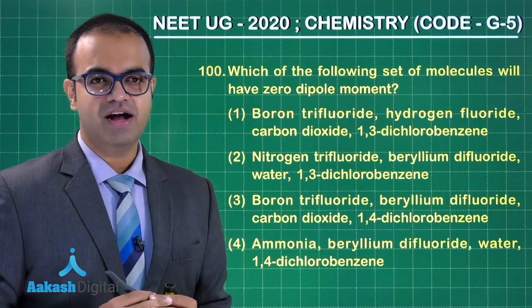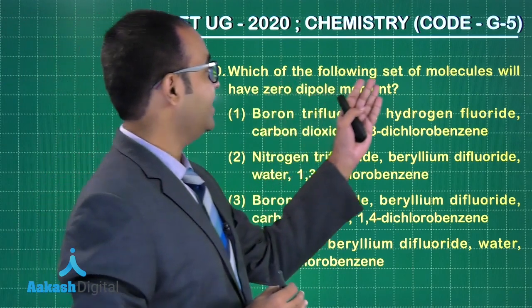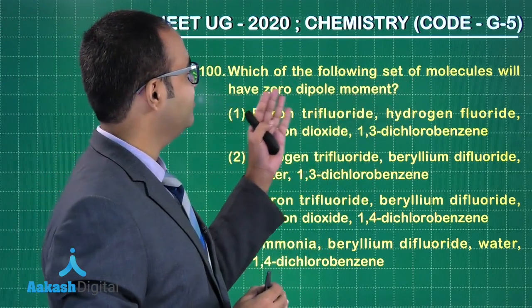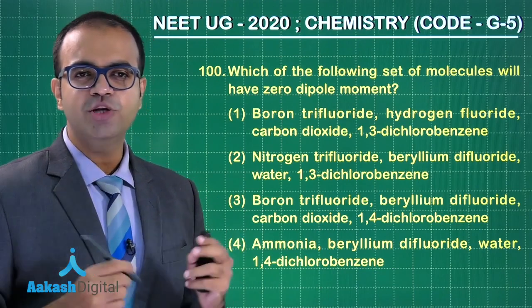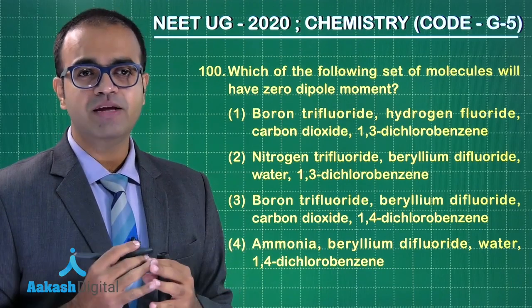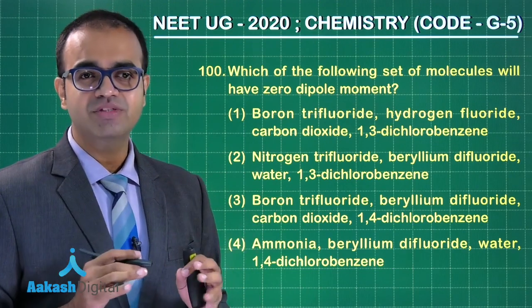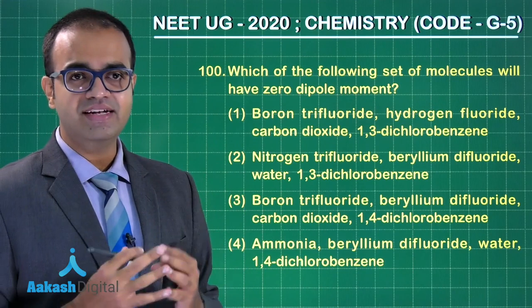Let us solve question number 100. Which of the following set of molecules will have zero dipole moment? Quickly recollect which molecules have zero dipole moment. The molecule which will be connected to only bonding pairs by the same atoms and it does not have any lone pair, so that is one hint.